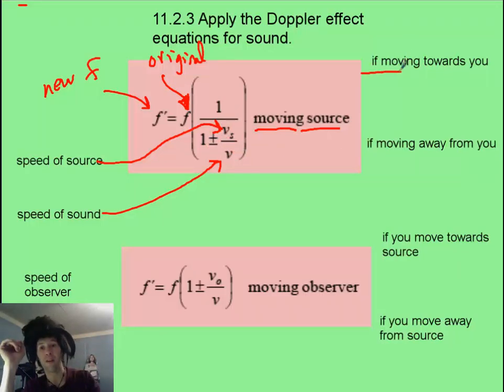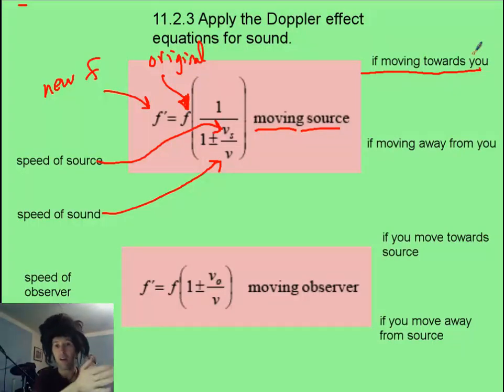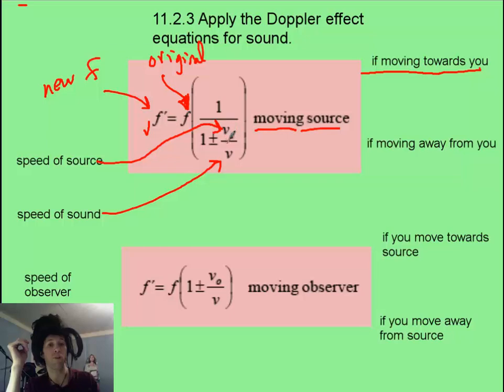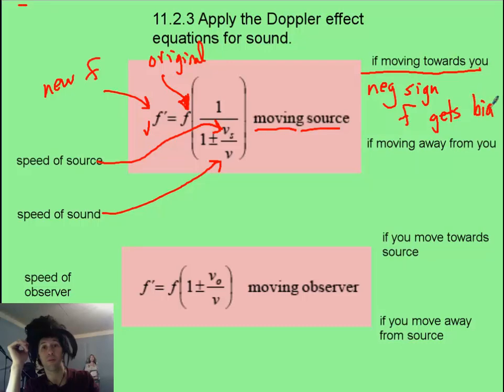Now you should know that if it's moving towards you, the wavelengths are going to get more scrunched together, which means a higher frequency. So that means if it's going to be higher, this f prime here, then you want to divide by a smaller denominator. So in this case, with this equation, you will use a negative sign, and f prime gets bigger.